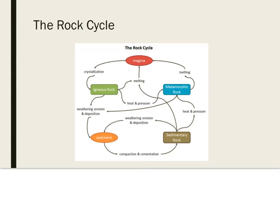The rock cycle includes several different processes. Crystallization is the process by which magma cools and forms solid rock. Heat and pressure often change one type of rock into another. Weathering, erosion, and deposition are the processes that break rock down into sediment at the earth's surface — wind, rain, running water, and ice commonly take part in these processes.